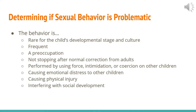A behavior can be determined as problematic sexual behavior if it is rare for the child's developmental stage and culture, frequent and has become a preoccupation, continues after normal correction from an adult, is performed by using force, intimidation, or coercion on other children, causes emotional stress or physical injury to other children, or interferes with the child's social development.